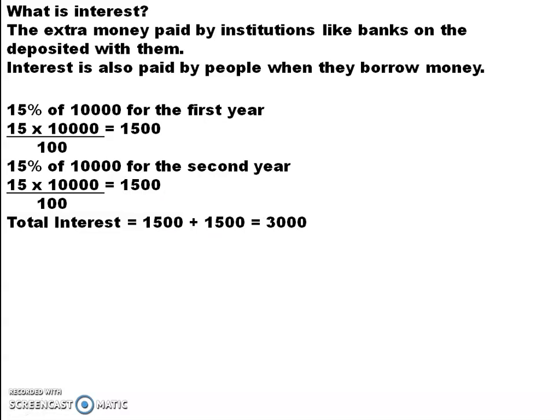If it was 3 years, again you will add 1,500. The amount which you pay for one year will not differ — that is the concept of simple interest. Understand that, because this is where you have a difference in compound interest. For simple interest, the amount which you pay for each year remains the same. Now, it is not easy to calculate this for 10 years and so on, so there is a formula for simple interest.